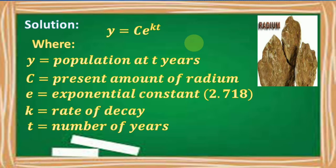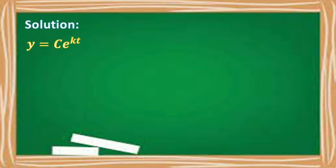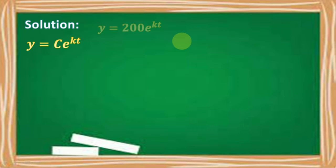In this equation, c is the present amount of radium, e is the exponential constant equivalent to 2.718, k is the rate of decay, and t is the number of years. Since there are 200 grams present at the start, we replace c by 200. Therefore, the equation becomes y = 200 · e^(kt).